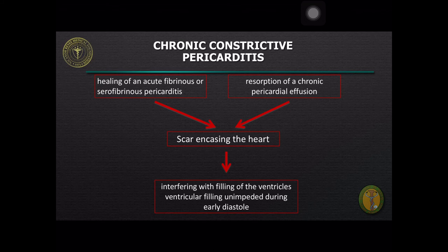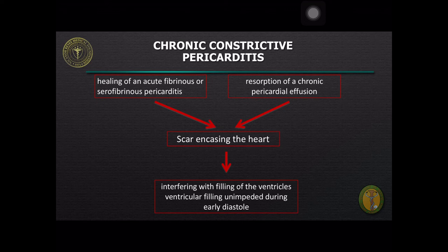Chronic constrictive pericarditis is a consequence of acute fibrinous or serofibrinous pericarditis followed by obliteration of the pericardial cavity with formation of granulation tissue, which subsequently contracts and forms a firm scar encasing the heart, which may become calcified. This interferes with filling of the ventricles during mid to late diastole but is unimpeded during early diastole. The most common cause in developing nations is TB pericarditis.